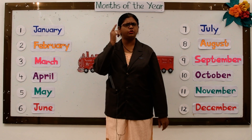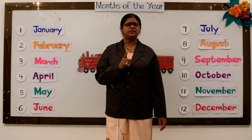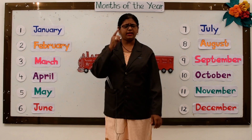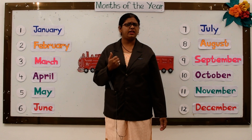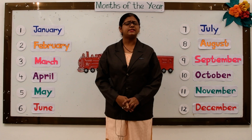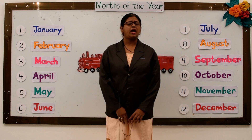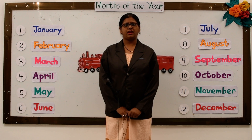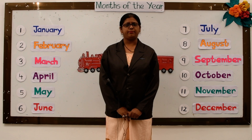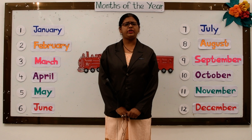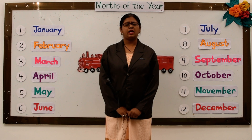Children, do you remember? I had taught you the 7 days of the week. Think and tell me how many days are there in a week? Somebody said 7. That's right. So let's quickly revise them once again: Monday, Tuesday, Wednesday, Thursday, Friday, Saturday and Sunday. These 7 days make a week. 4 or 5 weeks make a month and there are 12 months in a year.